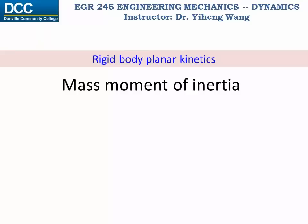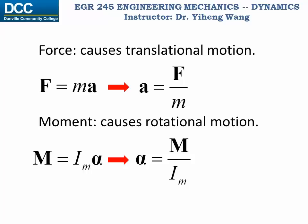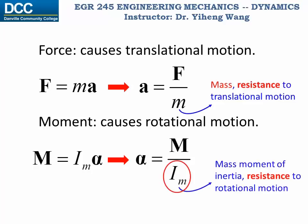As I mentioned in statics, in my opinion the best way to understand mass moment of inertia is by comparing the rotational motion to the translational motion. Mass provides resistance to translational motion. Similarly, mass moment of inertia provides resistance to rotational motion.